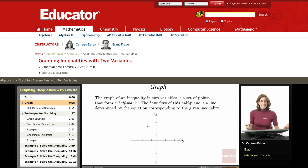First, we're going to discuss what to expect, what the graph of an inequality with two variables looks like. The graph of an inequality in two variables is a set of points that form a half plane. The boundary of this half plane is a line determined by the equation corresponding to the given inequality.